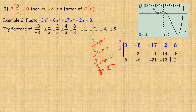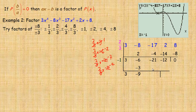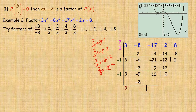Now for negative 1 — since the graph touches but doesn't cross, it's a double root. First pass with negative 1: bring down 3. 3 times negative 1 is negative 3; add to negative 6 to get negative 9. Negative 9 times negative 1 is positive 9; add to negative 21 to get negative 12. Negative 12 times negative 1 is positive 12; remainder of 0. Second pass with negative 1: bring down 3. Negative 3 plus negative 9 gives negative 12; positive 12 gives remainder of 0.